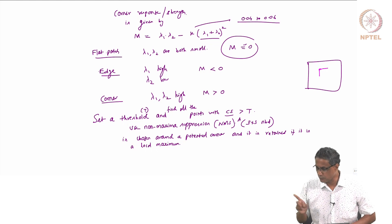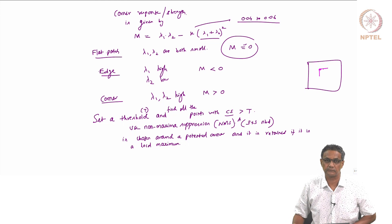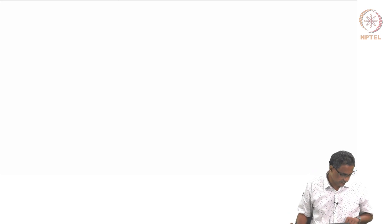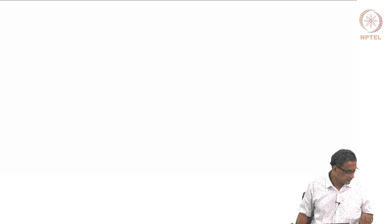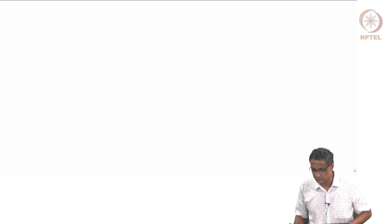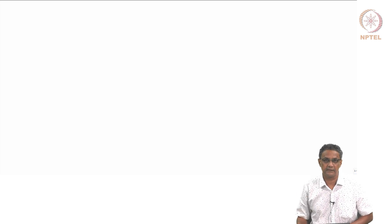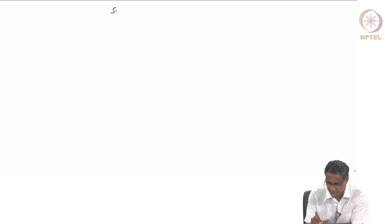Going back to what we did for edge detection, there were a few things we worried about: single response (handled by NMS), localization, and sub-pixel accuracy. Here too, we should consider sub-pixel localization — the actual maximum may occur within a pixel boundary around the detected corner. Detection is typically done up to sub-pixel accuracy, which is called sub-pixel localization.